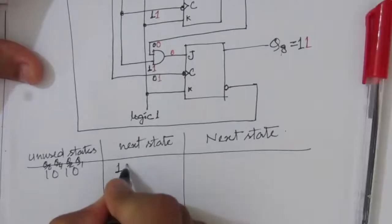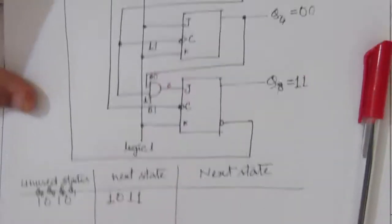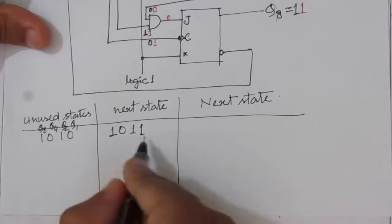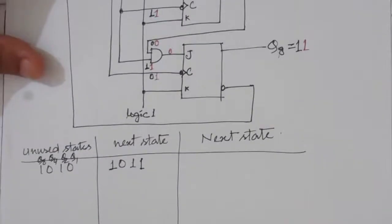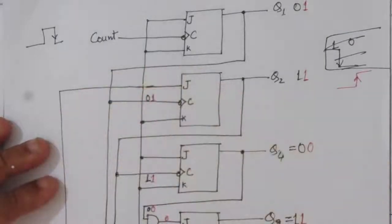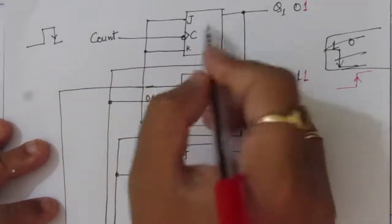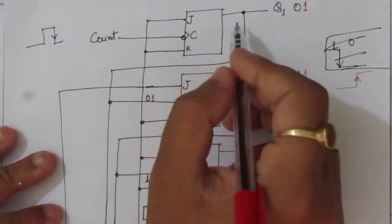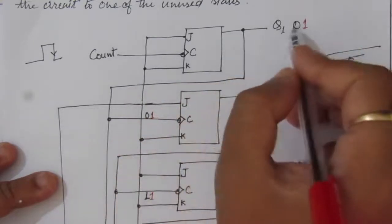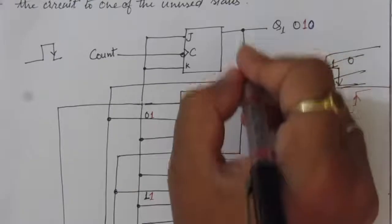So from unused state 1010, we get next state 1011, which is decimal 11 (8+2+1). This is still an unused state. We must analyze it further. For state 1011, when another count pulse arrives, the first flip-flop toggles — complementing its previous output of 1 to become 0. This 0 propagates to the second flip-flop's clock input.